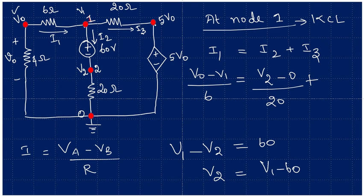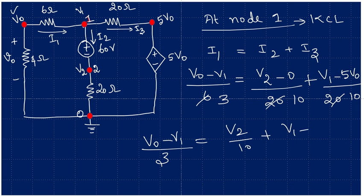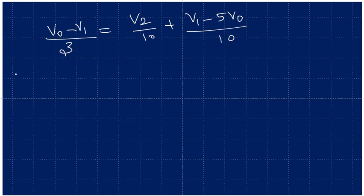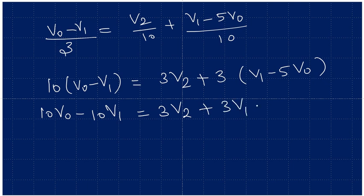For I3, it starts from node 1 and ends at the other point, so it is V1 minus 5V0 divided by that resistance. So we have V0 minus V1 divided by 6 — cancelling, this becomes 3 on one side and 10 on the other. This gives us: 3 equals V2 over 10 plus (V1 minus 5V0) over 10. Cross-multiplying: 10(V0 minus V1) equals 3V2 plus 3V1 minus 15V0, which expands to 10V0 minus 10V1 equals 3V2 plus 3V1 minus 15V0.